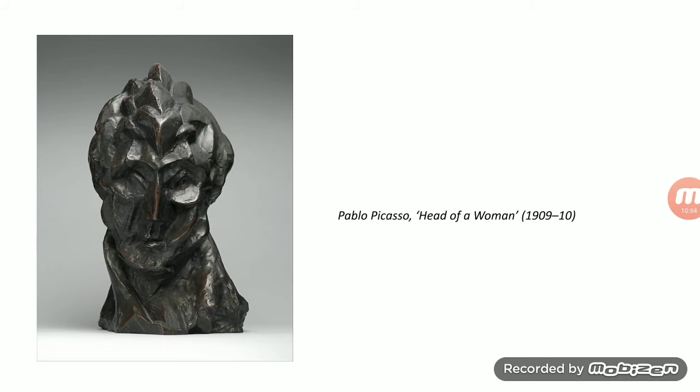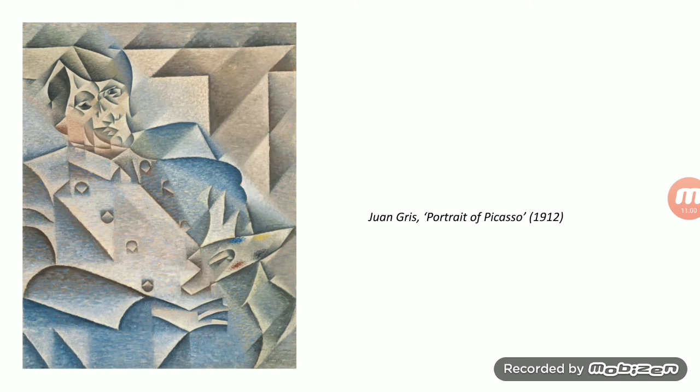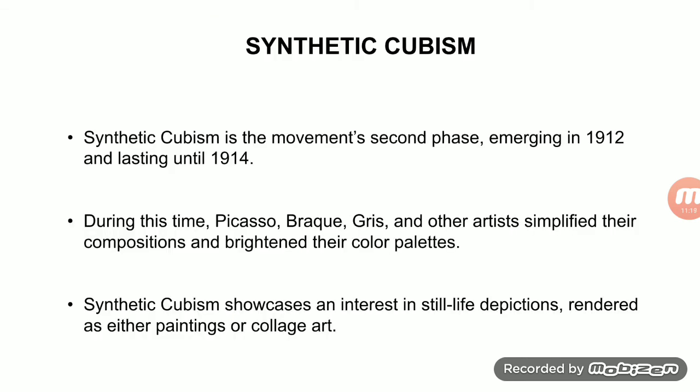In the portrait of Picasso by Juan Gris, the subject is shown with a different perspective and different angles. Gris created depth on a flat surface, demonstrating the transition into Synthetic Cubism.